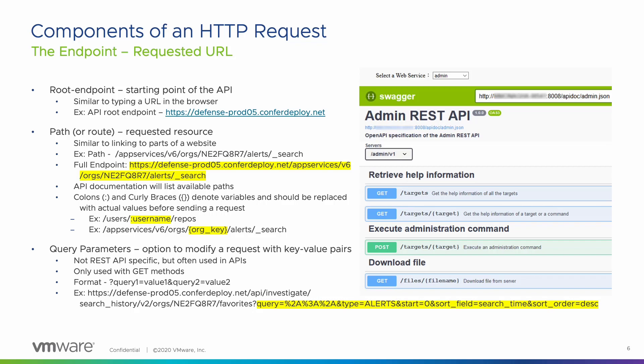The final part of an endpoint is query parameters. Technically, query parameters are not part of the REST architecture, but you'll see lots of APIs use them. Query parameters give you the option to modify your request with key-value pairs. They always begin with a question mark, and each parameter pair is separated with an ampersand. In the example below, we are asking the API to filter the results where the type equals alerts and the start equals zero. We are also asking to sort the results by the field search time and display them in descending order. Query parameters are not required for API calls, but can help narrow the results to exactly what the user wants to see.